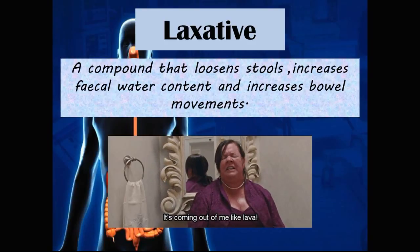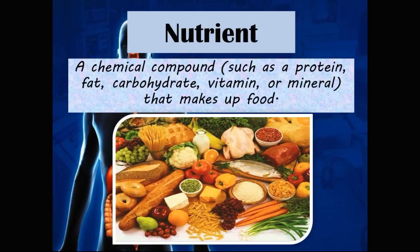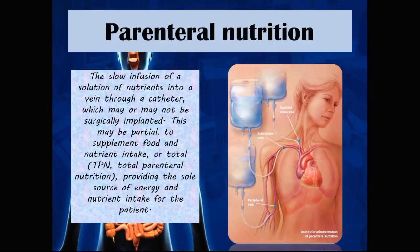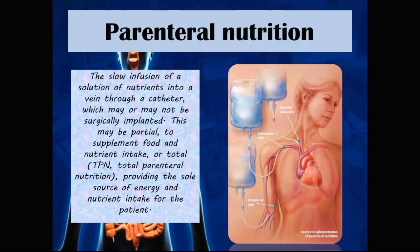A nutrient is a chemical compound — such as a protein, fat, carbohydrate, vitamin, or mineral — that makes up food. Parenteral nutrition is the slow infusion of a solution of nutrients into a vein through a catheter, which may or may not be surgically implanted. This may be partial to supplement food and nutrient intake, or total — TPN, total parenteral nutrition — providing the sole source of energy for the patient. Access points include a peripheral vein, subclavian vein, or superior vena cava, which is critical for patients with a completely obstructing esophageal carcinoma.